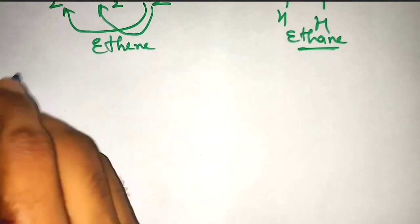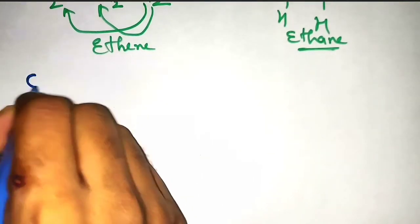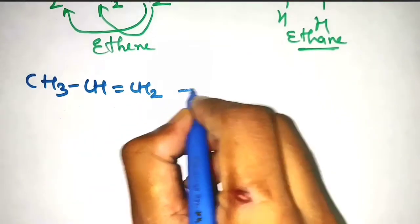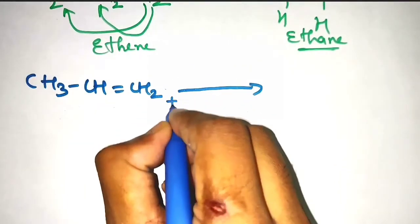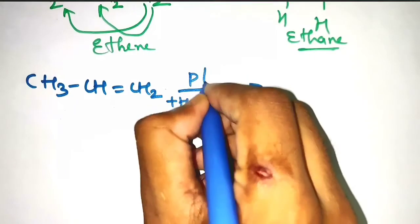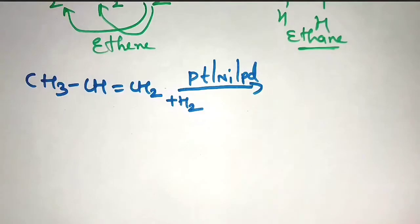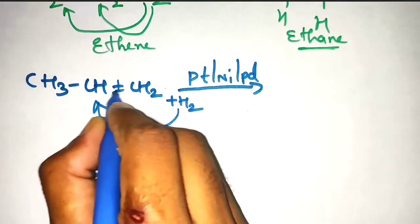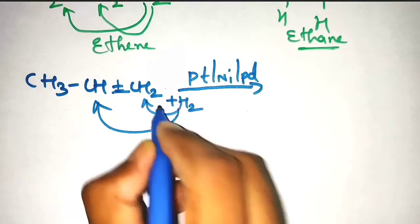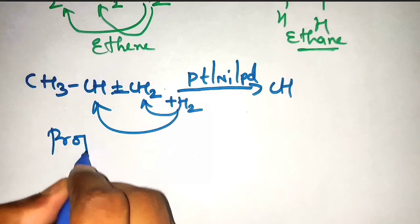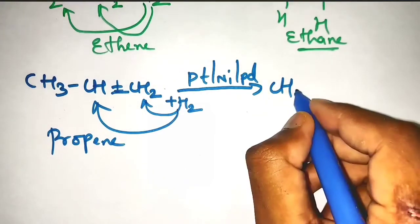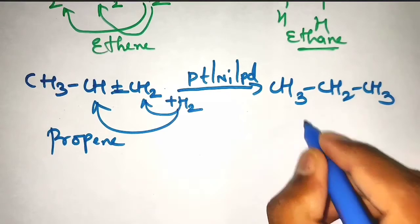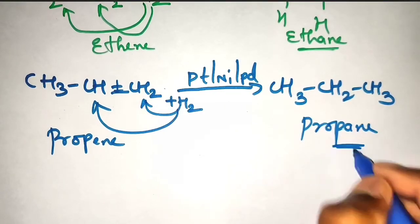If I am taking propene, CH3–CH=CH2, plus H2, in the presence of platinum — you can take nickel or palladium, any of the catalysts. What is going to happen? One hydrogen will go here, this double bond will get broken, and see: it converts to CH3CH2CH3. That is propane.